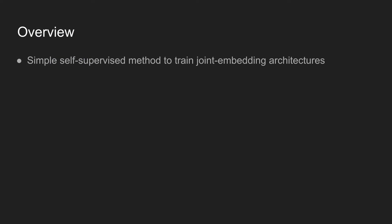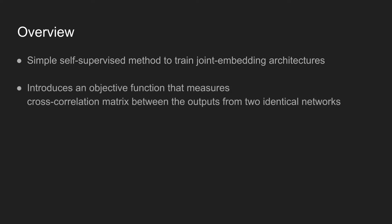The proposed method is a simple self-supervised method that trains joint embedding architectures. The authors introduce an objective function that measures the cross-correlation matrix between the outputs from two identical networks.